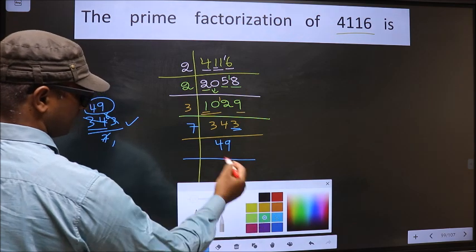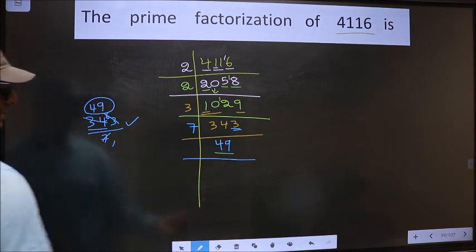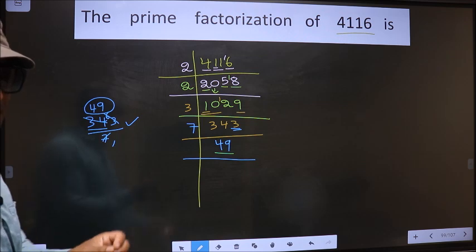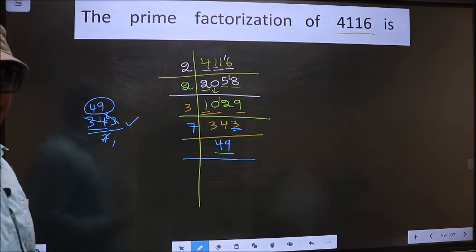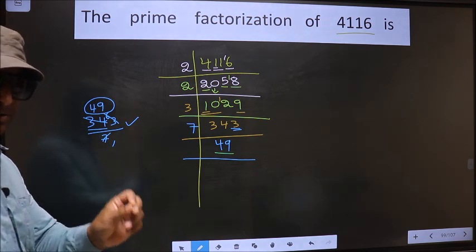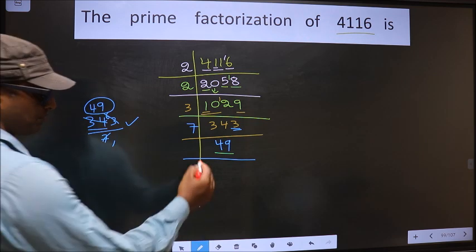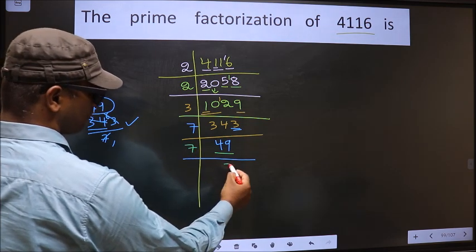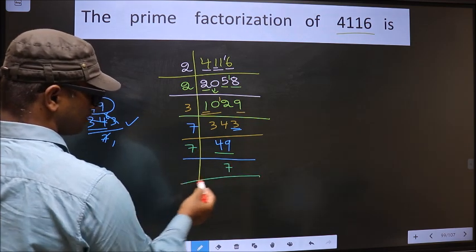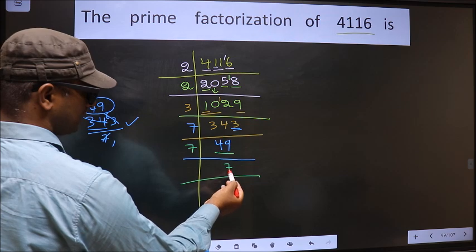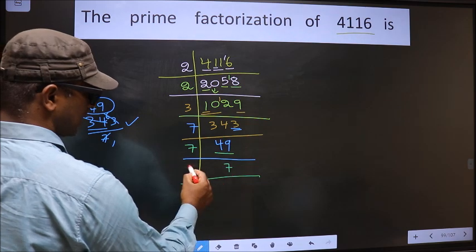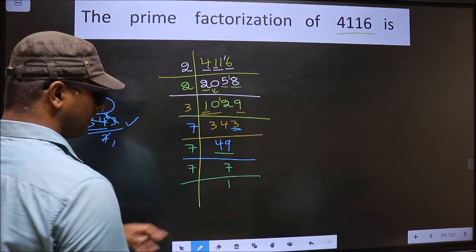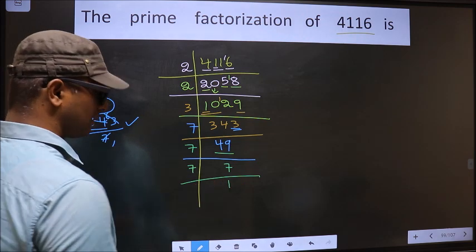49. Now here we have 49. Always remember, 7 squared is 49 — 7 into 7 is 49. So 7 times 7 is 49. Here we have 7; 7 is a prime number, so we take 7 times 1 is 7. We got 1 here.